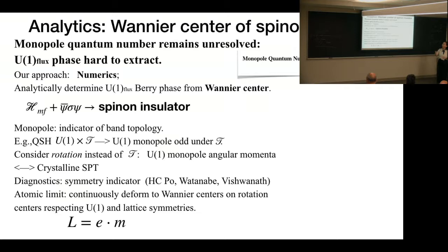To extract this hard U(1) phase, we first use some numerical simulation to calculate the overlap of the many-body wave function of this insulator. And we also develop an analytical argument, mainly based on the monopole.